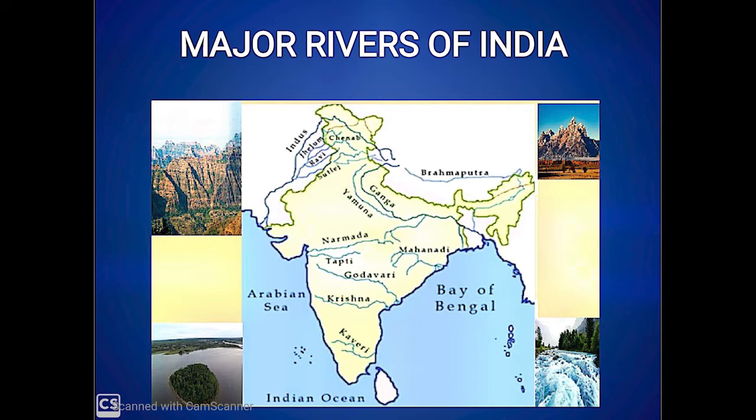India is a very big country with many rivers. Some are large and some are small. Being rich with many rivers, India is rightly called the country of rivers. These rivers originate from the high reaches of mountains by the melting of ice, glaciers, and from rainwater.